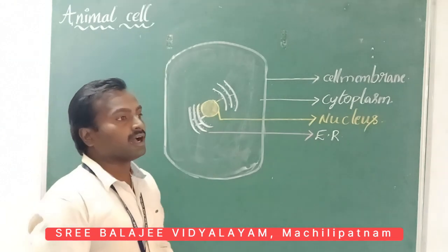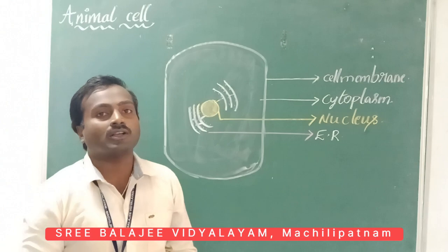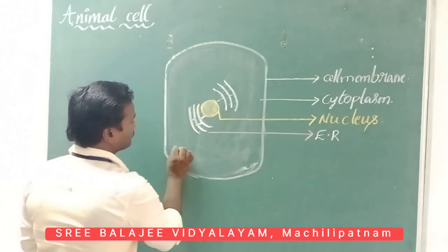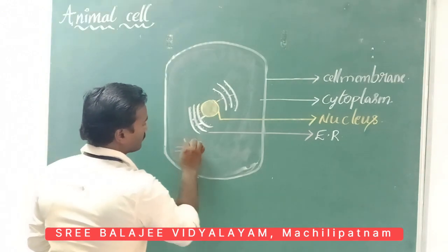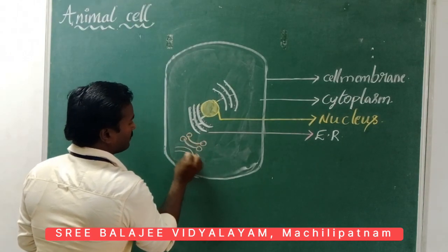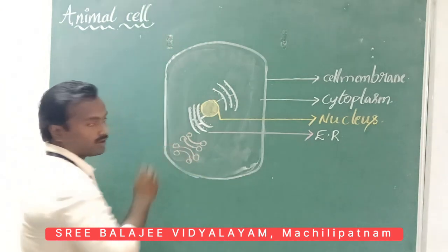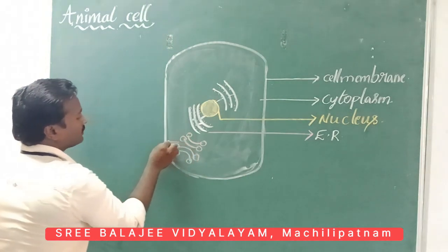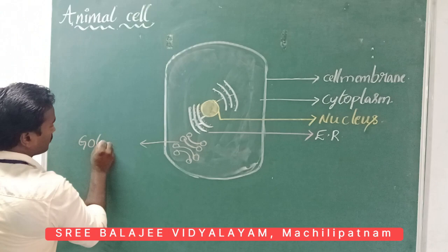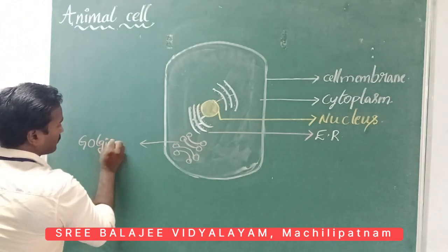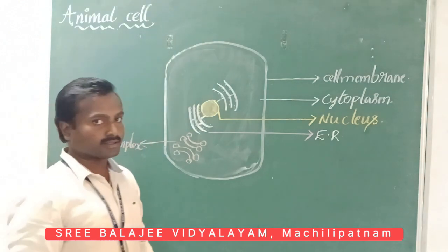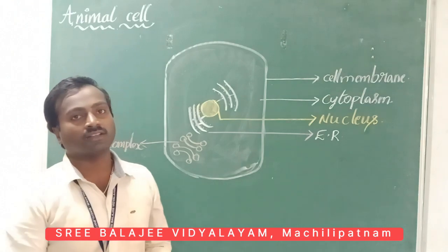Now we are going to draw another organelle present in the animal cell — the Golgi complex. This Golgi complex is also called the Golgi apparatus. It is useful for secretion in the animal cells.